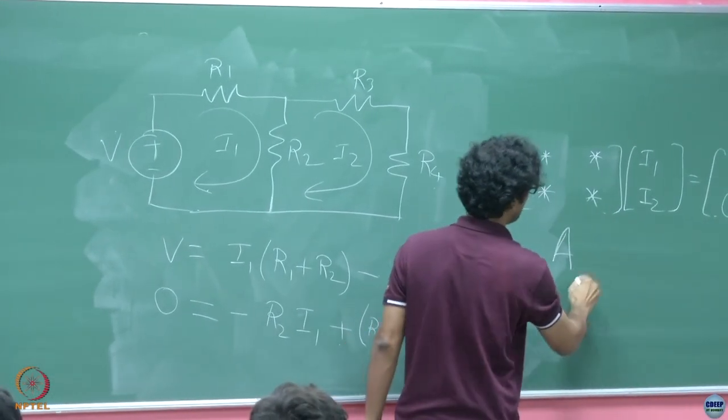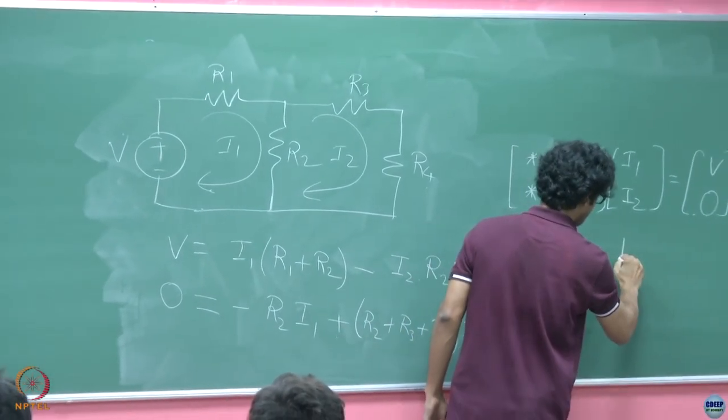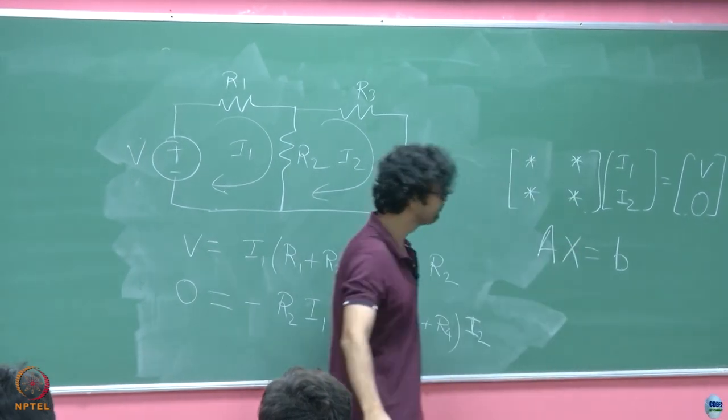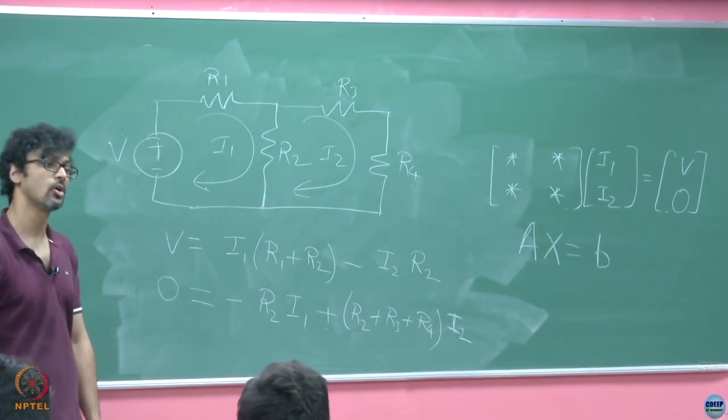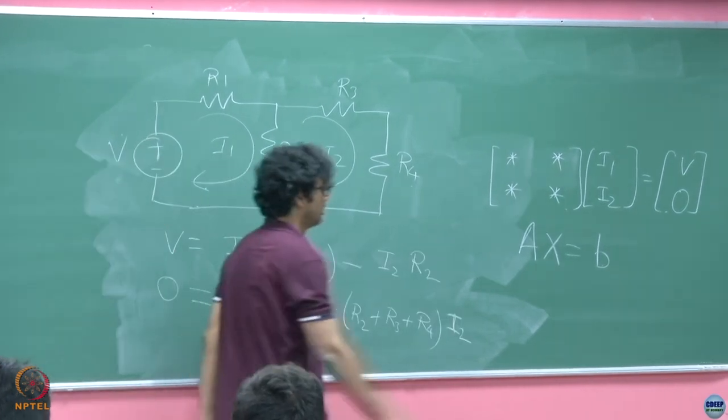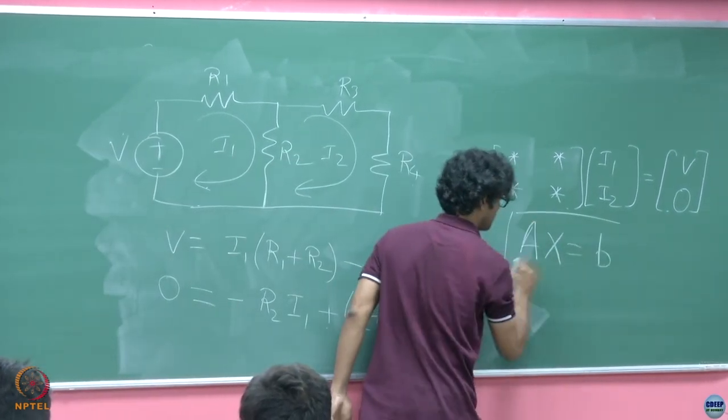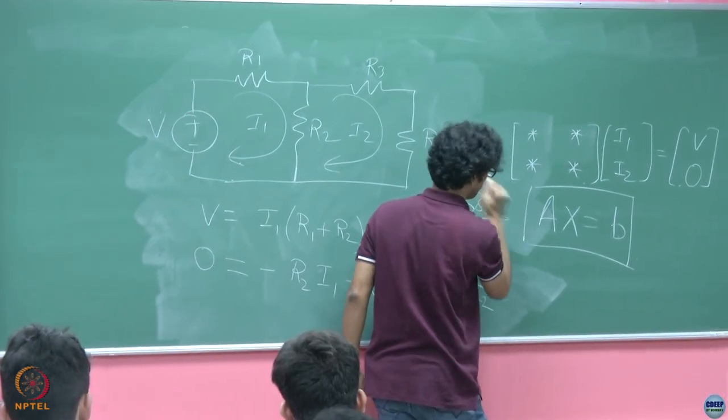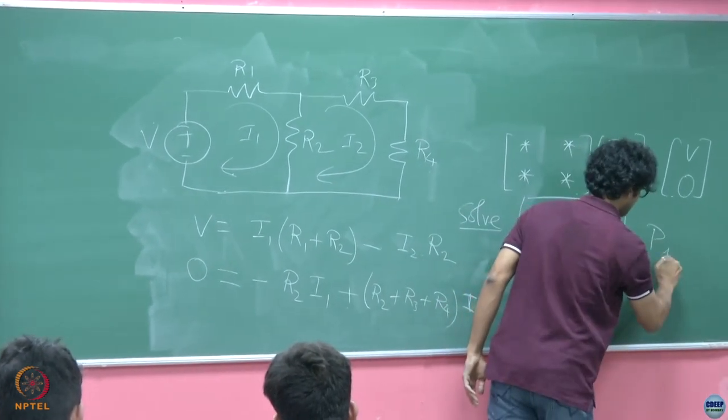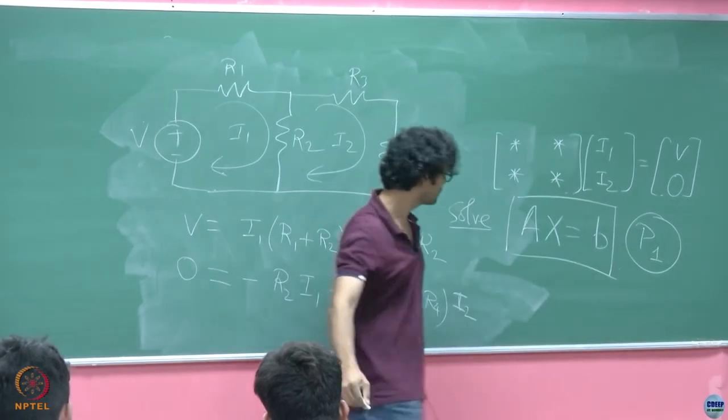What are the unknowns? The currents are the unknowns, the voltage is known. So I might jolly well write this equation in the following manner whose entries I leave it to you to fill up. So this is an equation of the form Ax is equal to B. That is what we shall be trying to solve. That is problem 1, not the circuit, but this is the first problem we will be solving in this course.